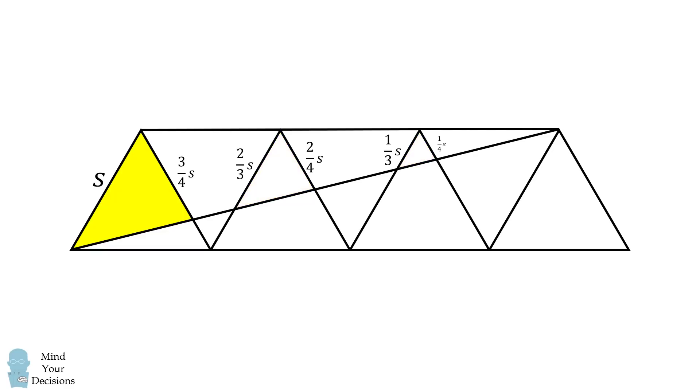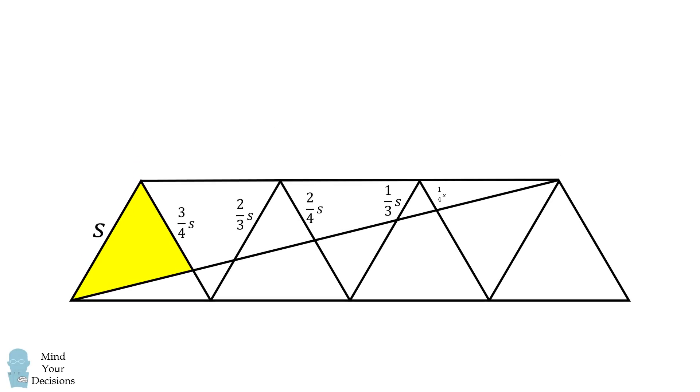From here, we will calculate the area of the largest triangle shown in yellow. Now, because each triangle is an equilateral triangle, this will be 60 degrees. So, its area will be one-half multiplied by s multiplied by 3 over 4 multiplied by s multiplied by the sine of the angle between it, which is 60 degrees. Now, sine of 60 degrees is equal to the square root of 3 over 2. Thus, this simplifies to be the following.